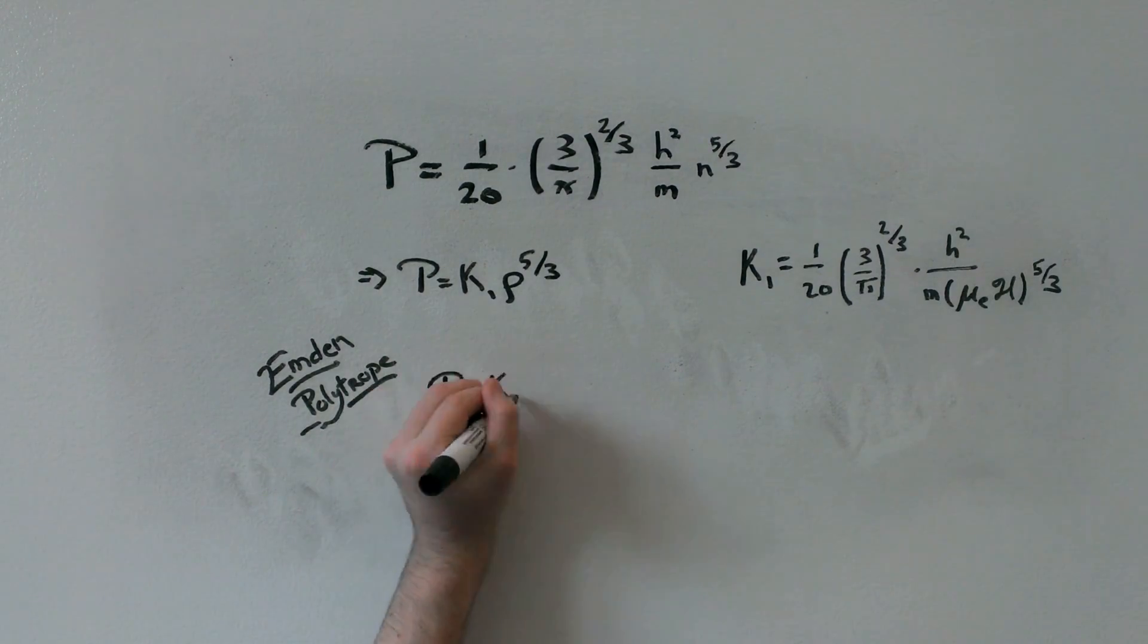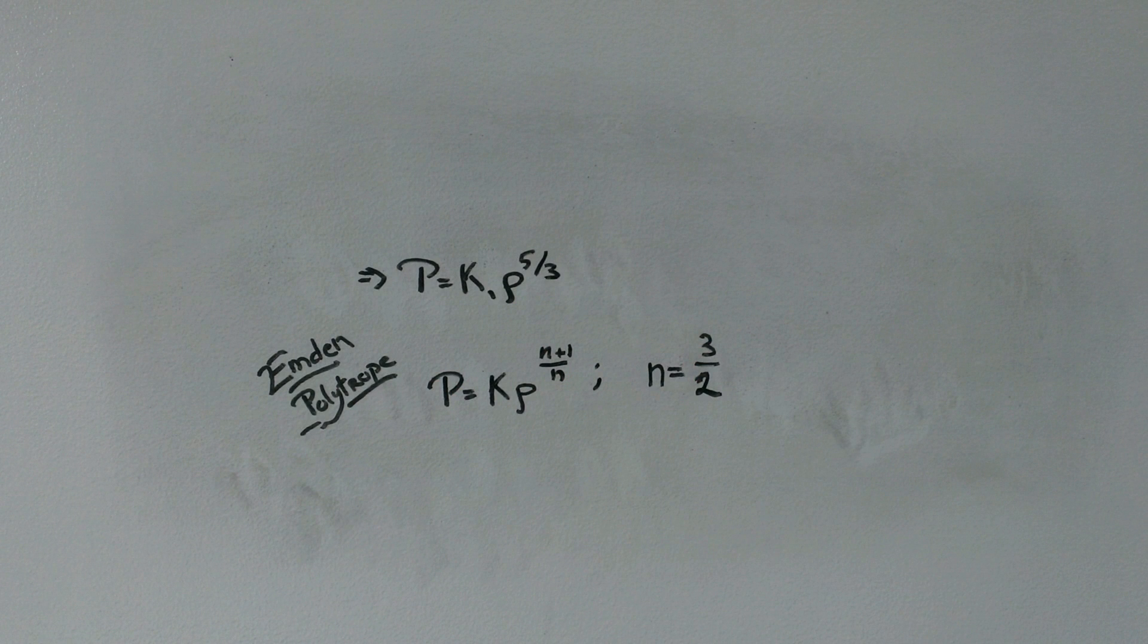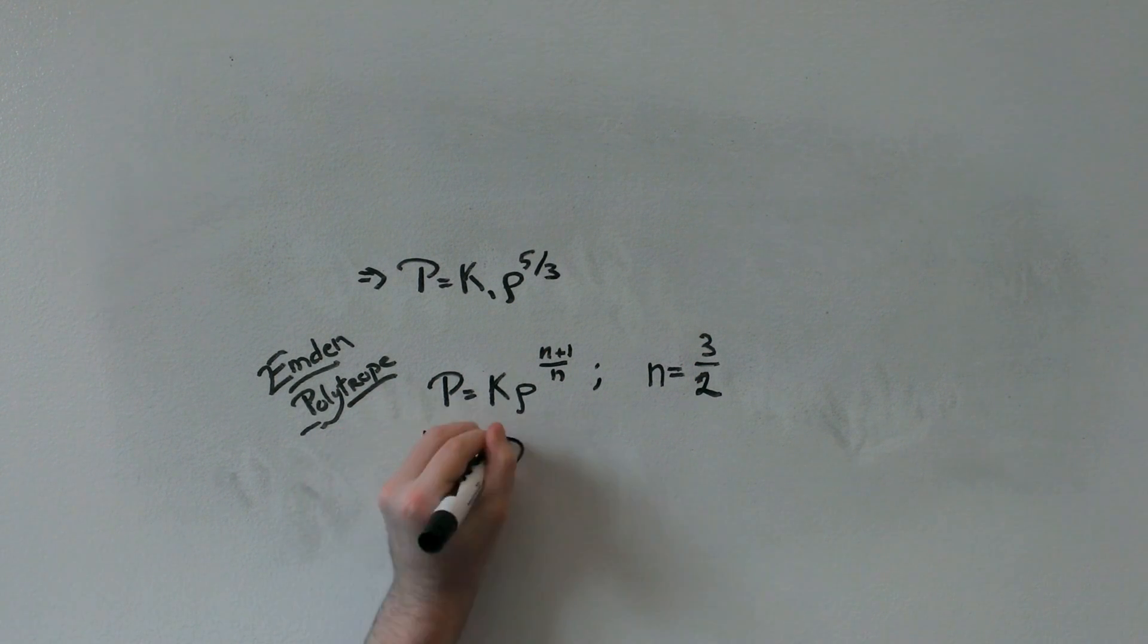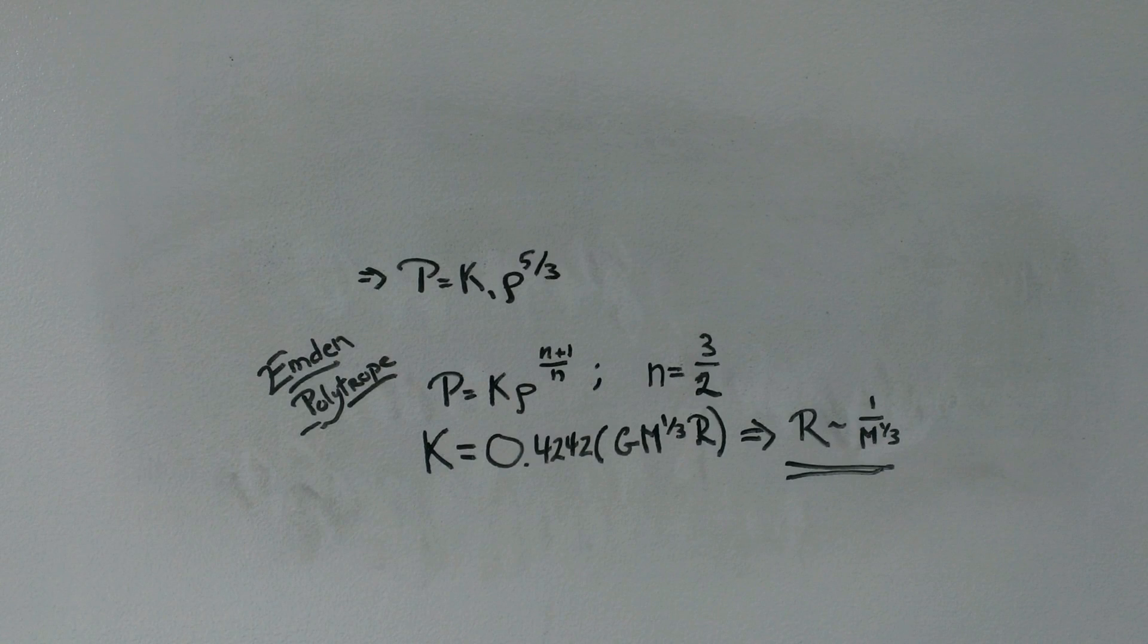Here, the standard polytrope form is p equals k times rho to the power of (n+1)/n. It follows from the theory of polytropes that the constant of the polytrope can be written as such, and we see again that the radius is inversely proportional to the cube root of the mass.